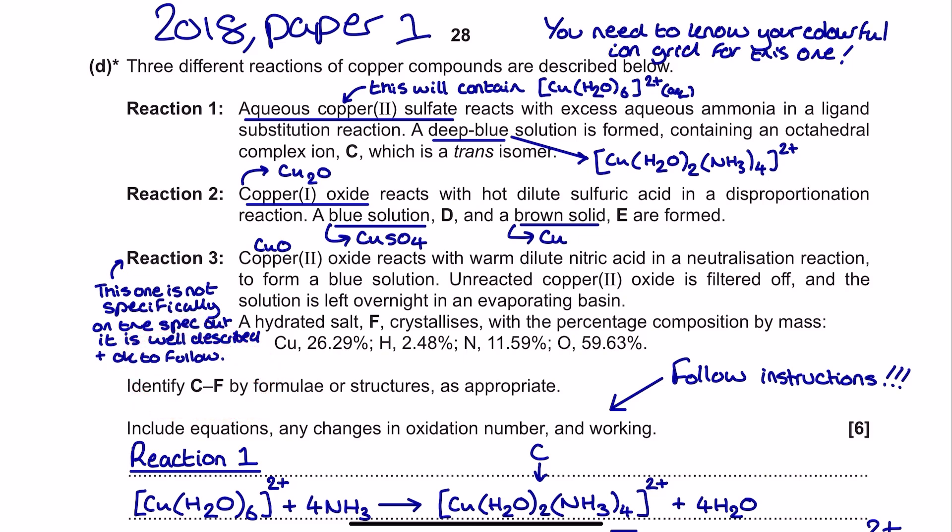So I'm going to start off with reaction one. Now, aqueous copper 2 sulfate, which we know contains the hexa-aqua complex ion, reacts with excess ammonia in a ligand substitution reaction. It's actually a partial ligand substitution there, and we know that because we form this deep blue solution that we're familiar with from the specification, which is an octahedral complex ion C. That's that one just there. And we know it's a trans isomer. So because we've got this 2 to 4 ratio of the monodentate ligands here, we do get cis-trans isomerism, and they specifically here want us to make the trans isomer.